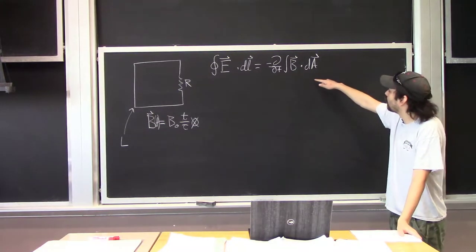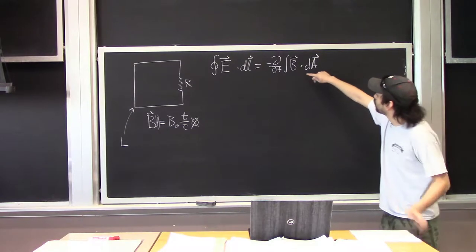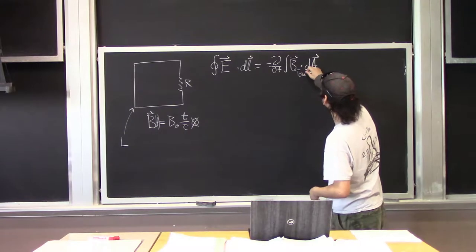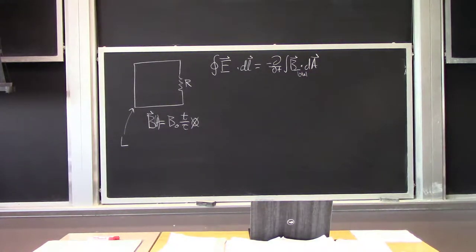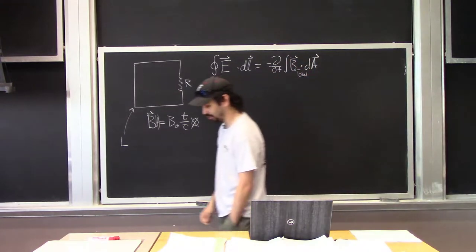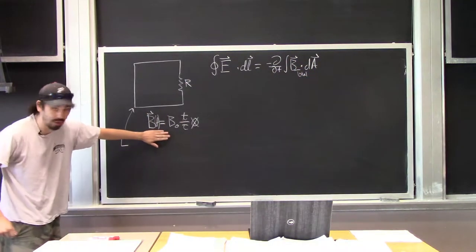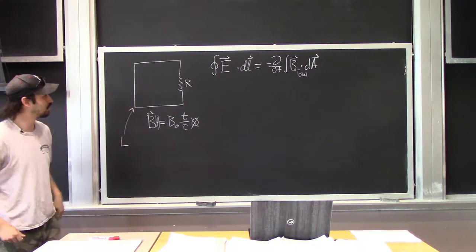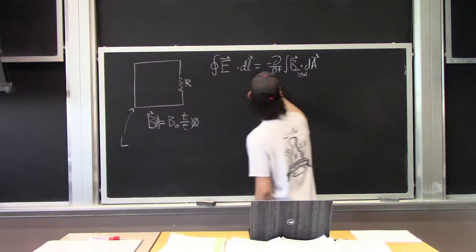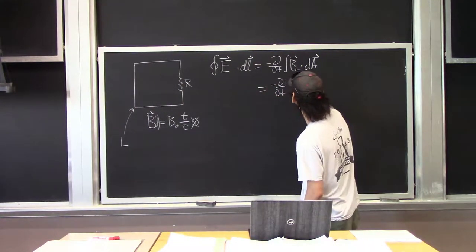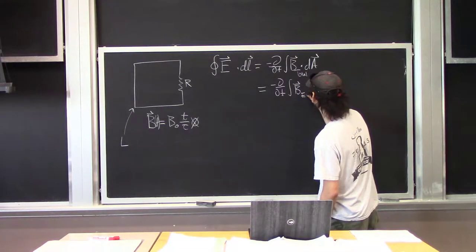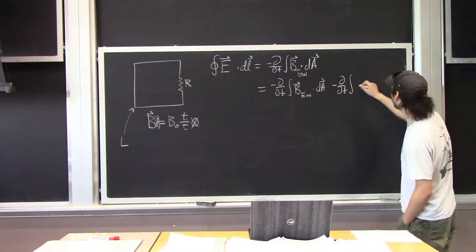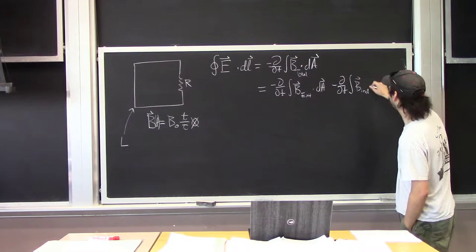So this is Faraday's law in its most general form. The first thing I'd like to do is break it apart the way I showed you in the notes. The total magnetic field passing through the loop has two parts: the external magnetic field and the magnetic field produced by the current. So this can be broken apart as minus the partial derivative with respect to t of the integral of B_external dot dA, minus the partial derivative with respect to time of the integral of B_induced dot dA.